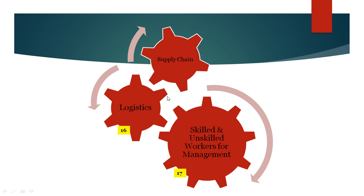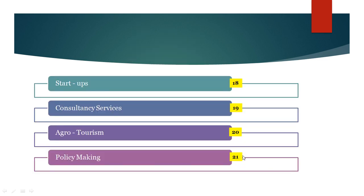Logistics, which are a very important part of the supply chain, require skilled as well as unskilled workers and employees for their management. Next, you can open your startups, be a consultant to any consultancy or policy services company, open an agritourism business, or enter into policy making.